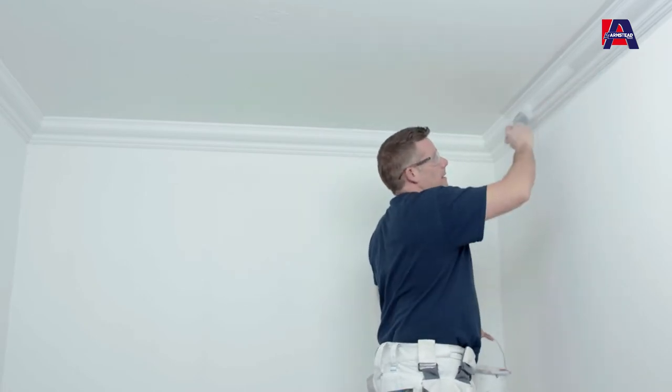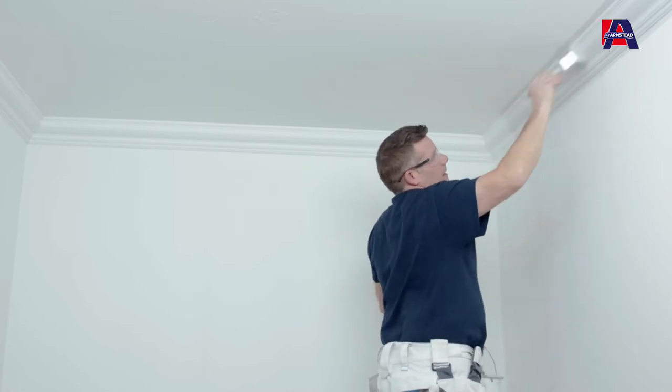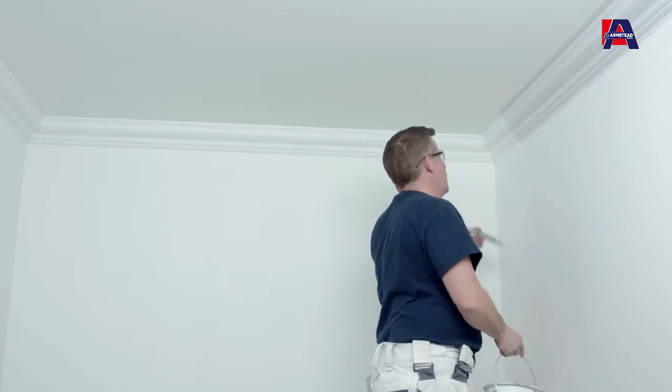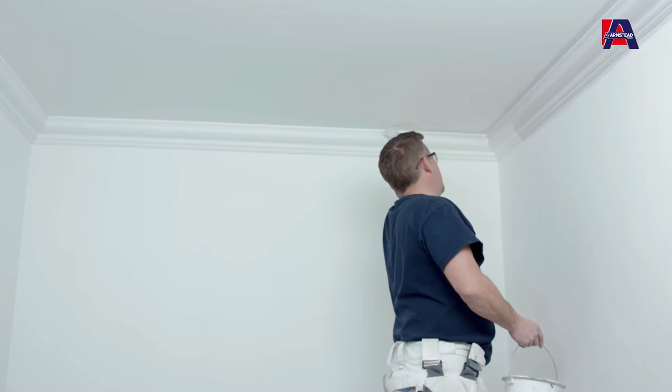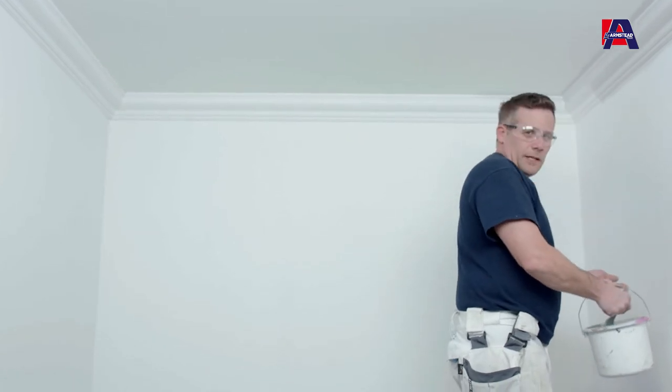So around about 50 millimetres at a time up onto the ceiling and down onto the walls and then we just carry on with this all the way around the wall, all the way around the ceiling, painting in the coving and then it's time to get the roller out. So I'll finish this off for now.